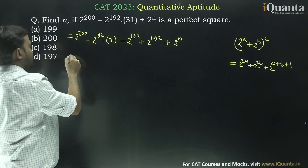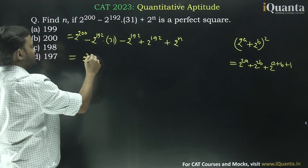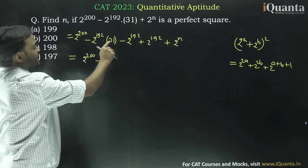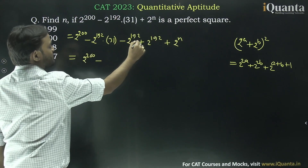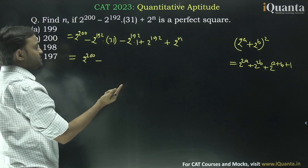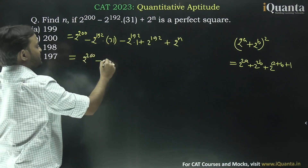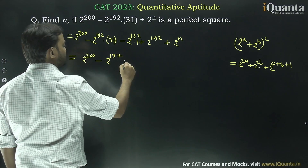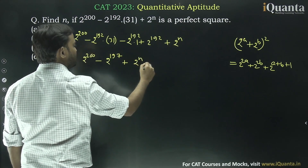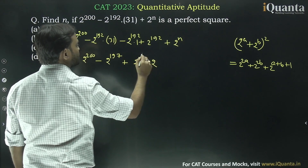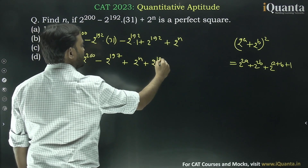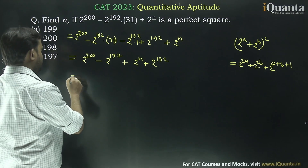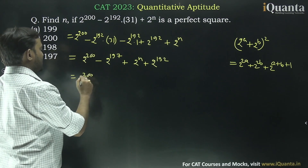We are making this as 2 to the power a plus 2 to the power b form. So this will be 2 to the power 192 into (31 + 1), which we can say is 32. So 32 is 2 to the power 5, giving 5 + 192 = 2 to the power 197, plus 2 to the power n, minus 2 to the power 192.